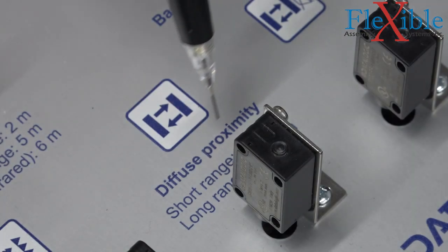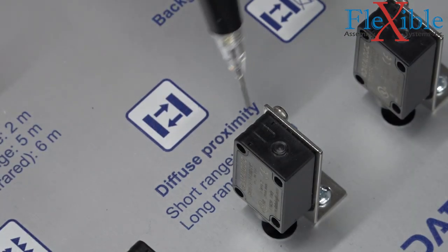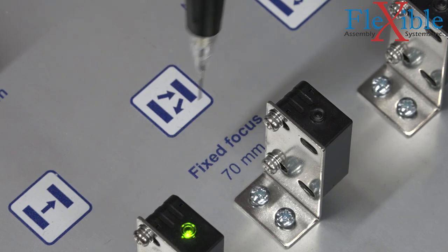But what if you need to detect a very small target that may not reflect enough light? Convergent-beam diffused sensors, also known as fixed focus sensors, can solve that.